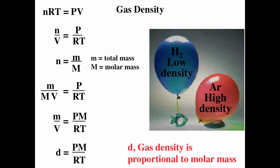We can also look at density. Starting again with PV = NRT, dividing both sides by V and RT gives P/RT = N/V. Since N (moles) equals total mass (m) divided by molar mass (M), substituting gives m/(M×V) = P/RT. Multiplying both sides by molar mass M, we get m/V = PM/RT. Since m/V is density, the density of a gas equals pressure times molar mass divided by the gas constant times temperature: D = PM/RT.